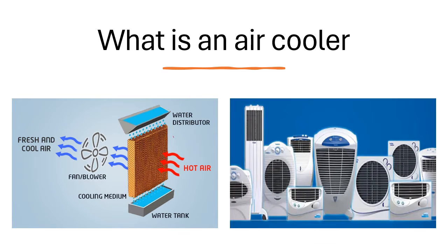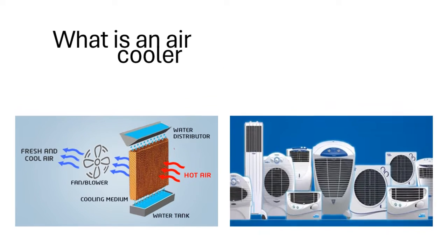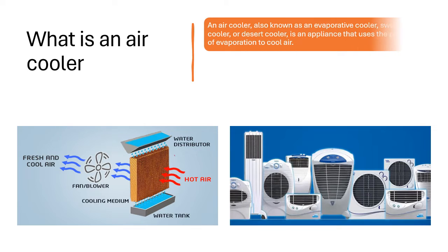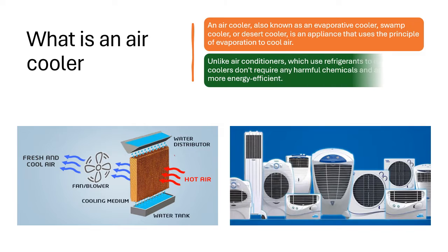What is an air cooler? An air cooler, also known as an evaporative cooler, swamp cooler, or desert cooler, is an appliance that uses the principle of evaporation to cool air. Unlike air conditioners, which use refrigerants to cool air, air coolers don't require any harmful chemicals and are generally more energy efficient.